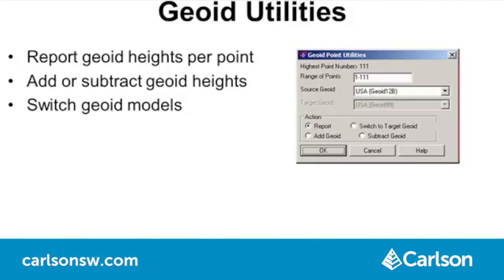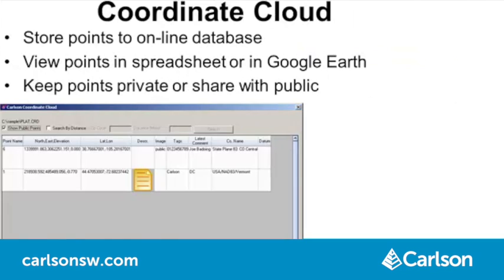GeoidUtilities is a new command to report geoid heights at points, add or subtract geoid heights, or switch geoid models. CoordinateCloud is a new command for storing points to an online database for your own archive, to share with work colleagues, or to share with the surveying community. When storing points, you can include a picture and comments. You can search the database in an area and show the results in a list or in Google Earth.